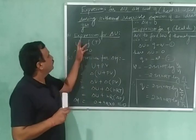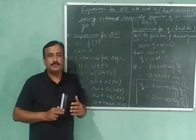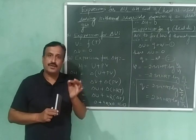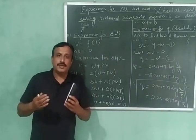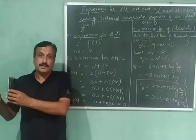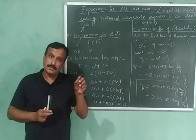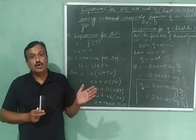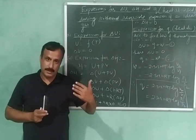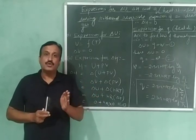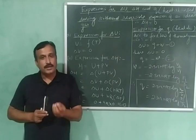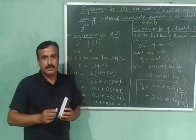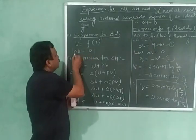Let us start with the expression for delta U, the change in internal energy. The internal energy of an ideal gas is a function of temperature only. If temperature increases, internal energy increases; if temperature decreases, internal energy decreases. Here the process is isothermal — temperature remains constant throughout — so there will be no change in internal energy. Therefore delta U is equal to zero.